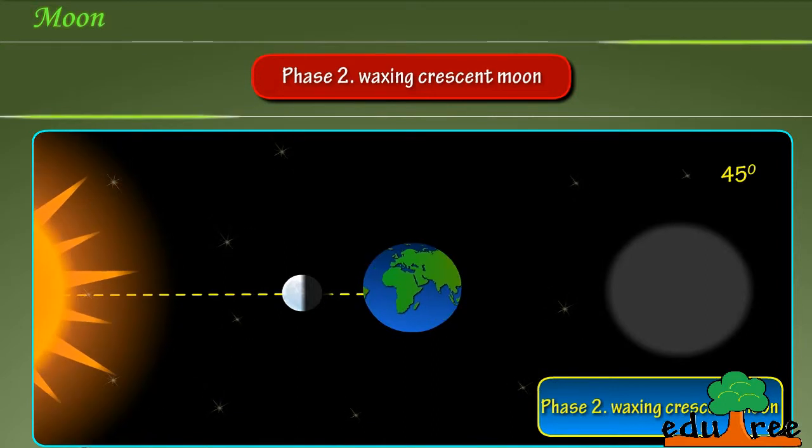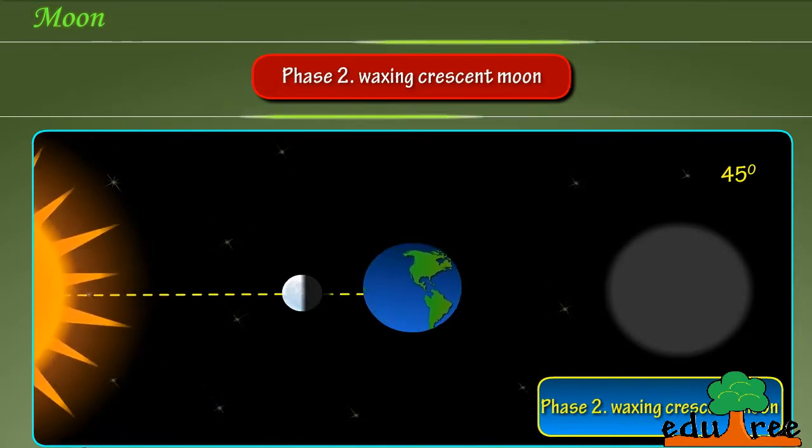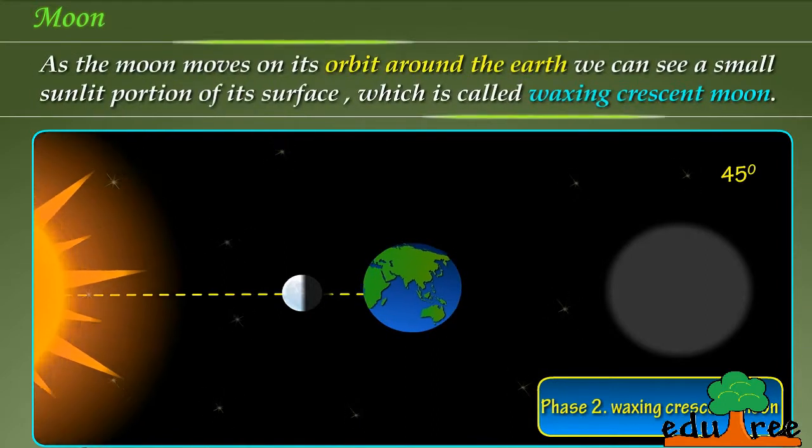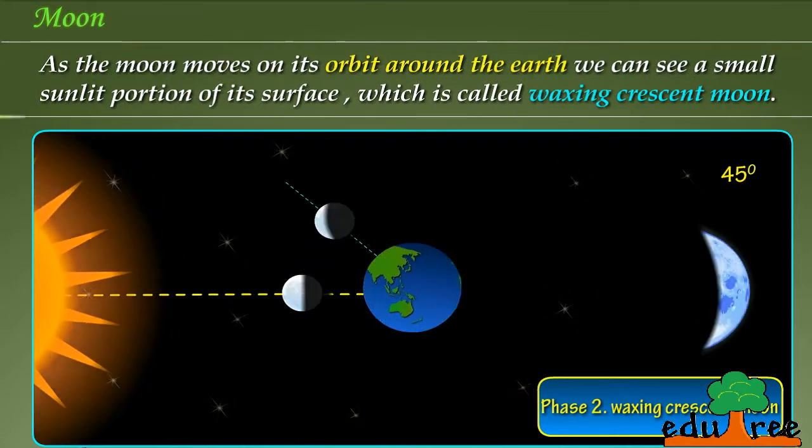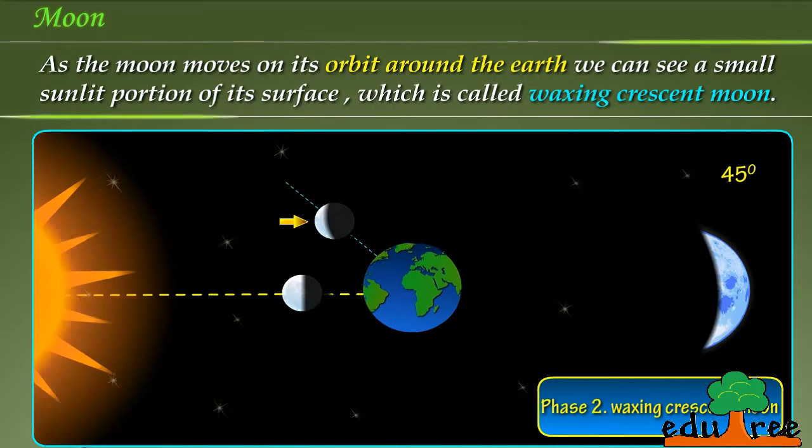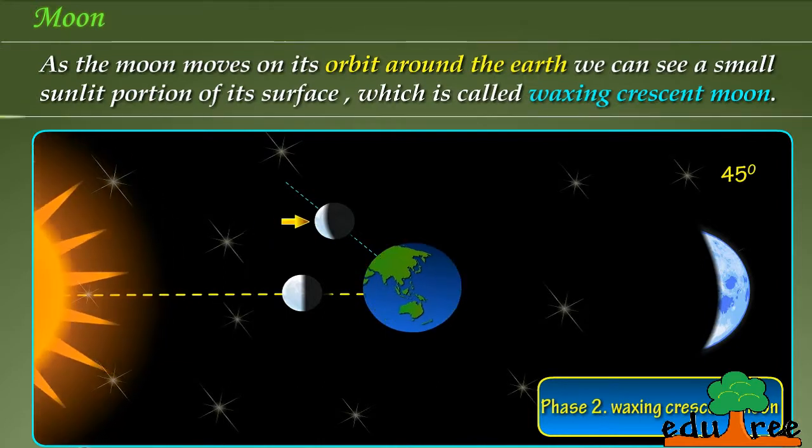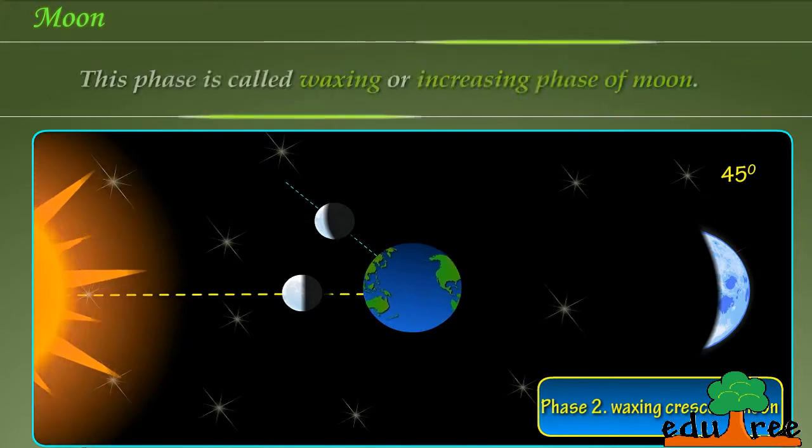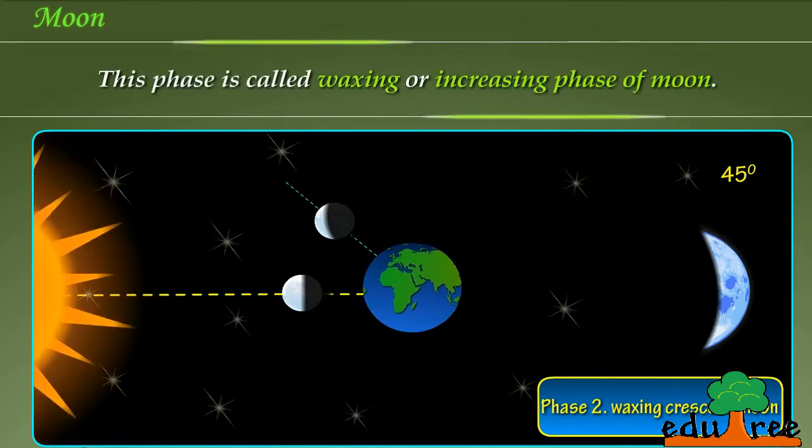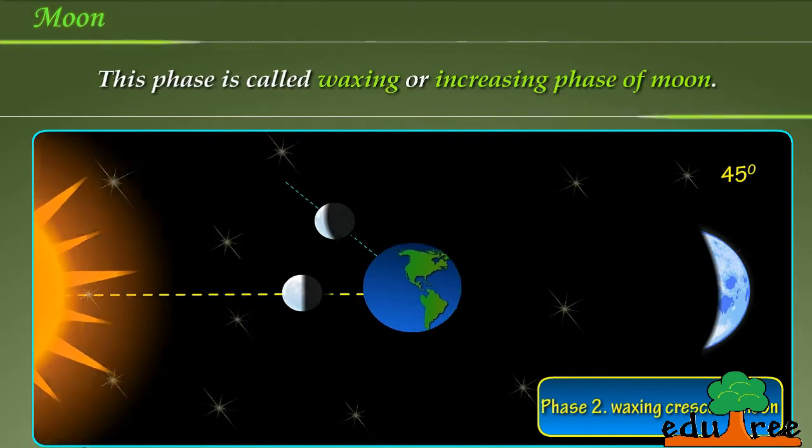Phase 2: Waxing crescent moon. As the moon moves on its orbit around the earth, we can see a small sunlit portion of its surface, which is called waxing crescent moon. This phase is called waxing, or increasing phase of moon.